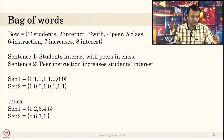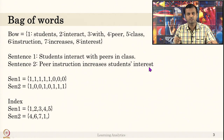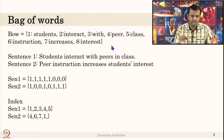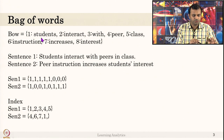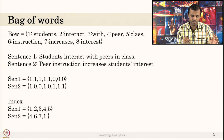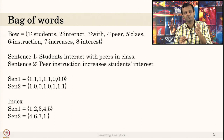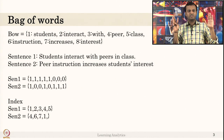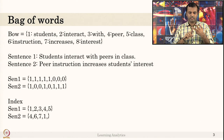Now I have the bag of words for the two sentences. Consider this as my dictionary — the complete set — which has eight words: students, interact, with, peer, class, instruction, increases, interest. Note that I removed words like 'in'. I gave a position to each word. My dictionary has only eight words, and the sentences are drawn from this dictionary.